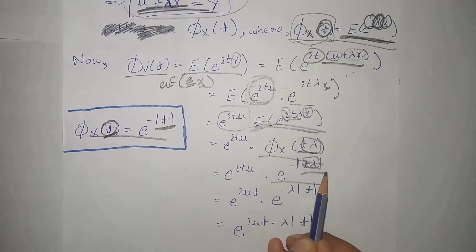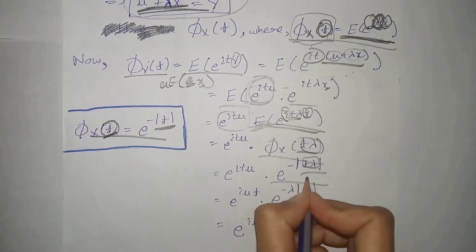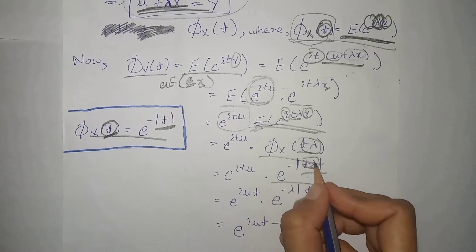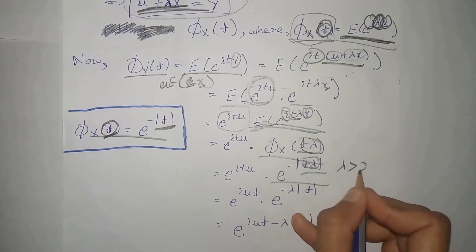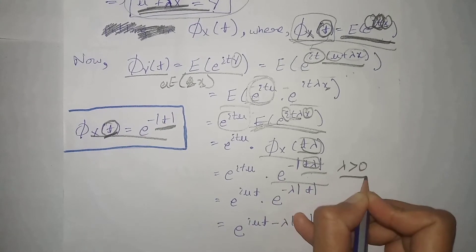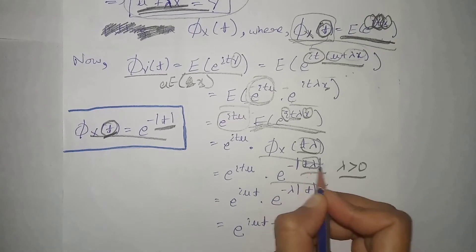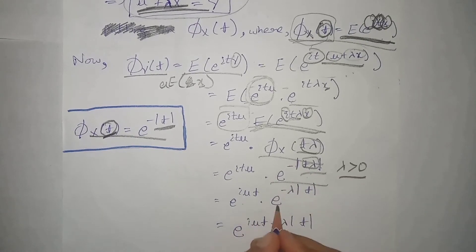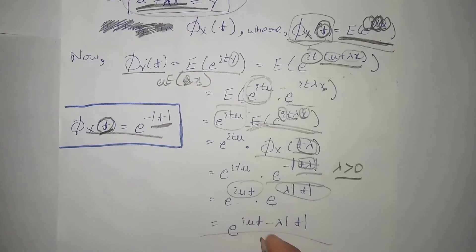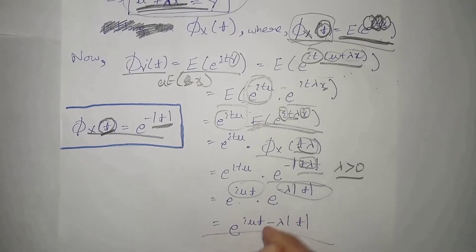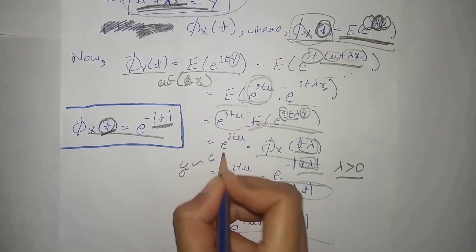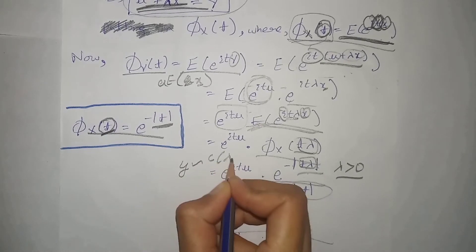In the definition of the Cauchy distribution, lambda always takes positive values, so there is no need to put it inside the modulus. That is why lambda is taken outside. The base is the same, so powers add up — this term plus this term — and this is the characteristic function of the y Cauchy variate which belongs to the Cauchy distribution with parameters lambda and mu.